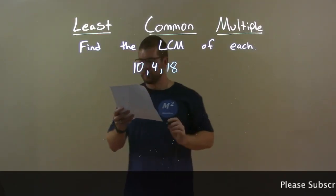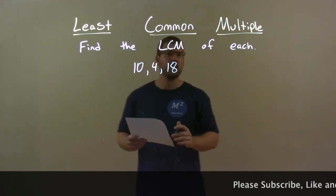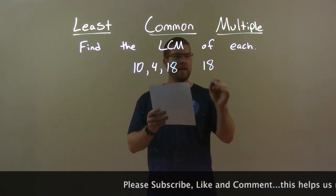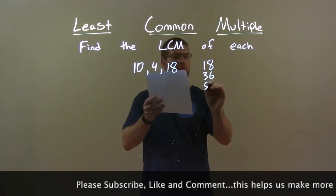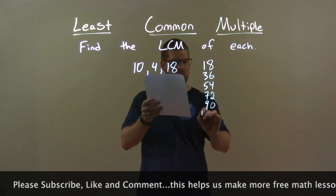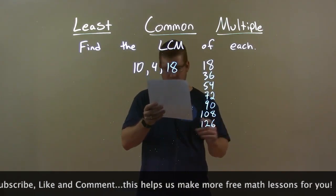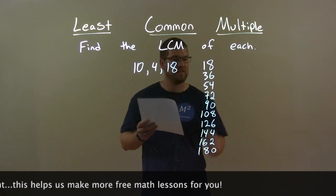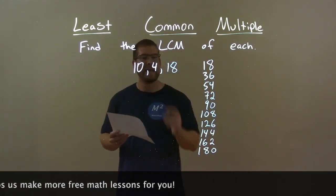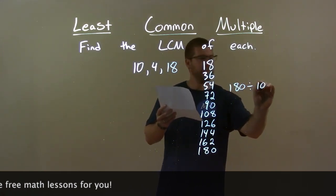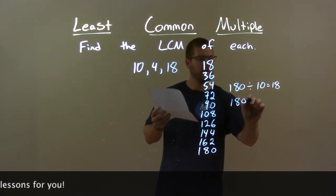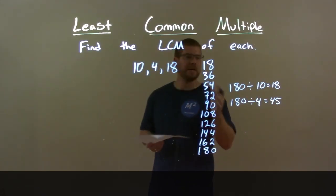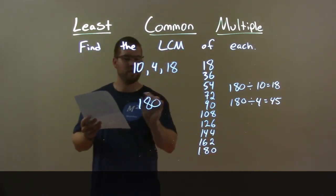10, 4, and 18. I think 18 is the largest, so I find its multiples and check if each is divisible by both 10 and 4. 18, 36, 54, 72, 90, 108, 126, and 144 all fail, as does 162, but 180 does. 180 is the first multiple of 18 divisible by 10 and 4. 180 divided by 10 is 18, and 180 divided by 4 is 45. So 180 is my final answer.